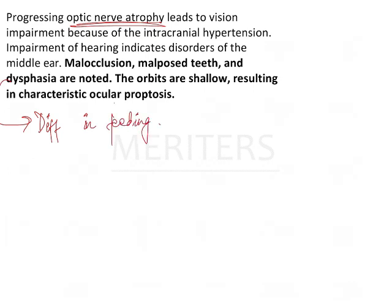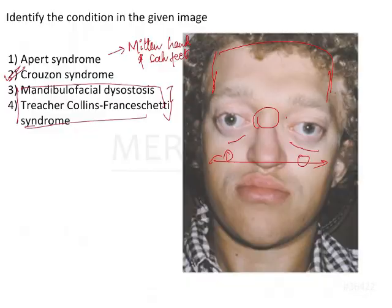As a result of the difficulty in feeding, the patient is going to be malnourished and extremely thin in structure. The orbits are shallow, resulting in characteristic ocular proptosis.